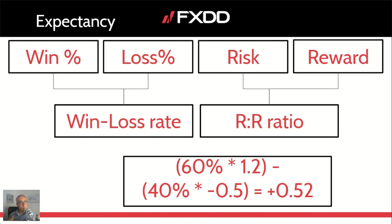I also spoke about the importance of the T-statistic in measuring the long-term reliability of your strategy. On average with my method looking at four-hour charts, I typically see 60% win rate, 40% loss rate, and about 1.5 times the reward-to-risk ratio.